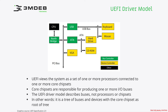Then we have a bus — some bus which connects USB, ATA, VGA. Behind the USB controller we have the USB bus, behind ATA we have the ATA bus, and so on. Further after that we have devices. Core chipsets are responsible for producing one or more IO buses. We can see that the Northbridge in this case produces the PCI bus, USB produces the USB bus, and so on.